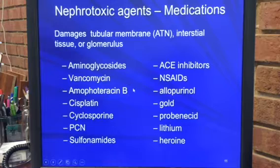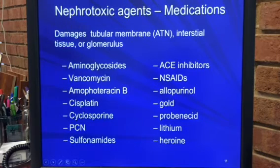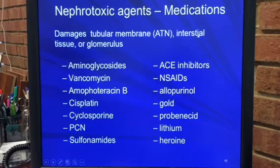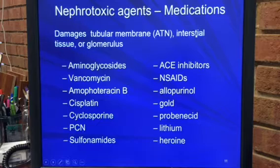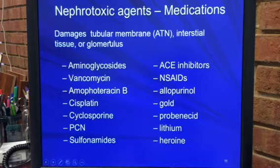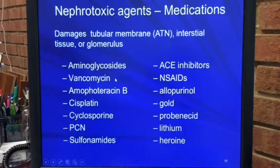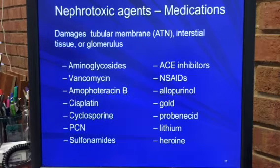Medications that are nephrotoxic damage the tubular membrane producing ATN, or they damage the interstitial tissues, or they can damage the glomerulus. These are some of the medications that can produce this damage.